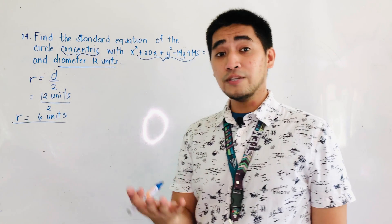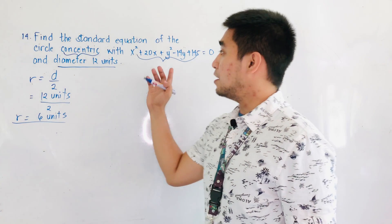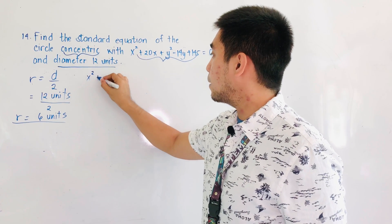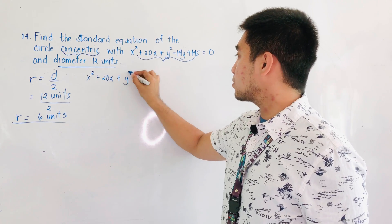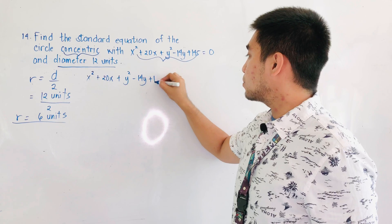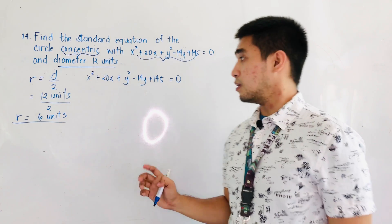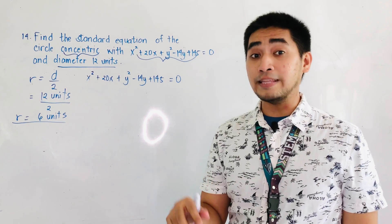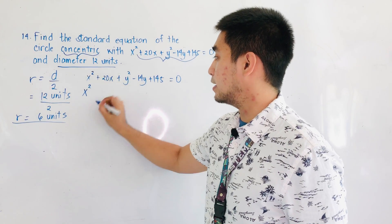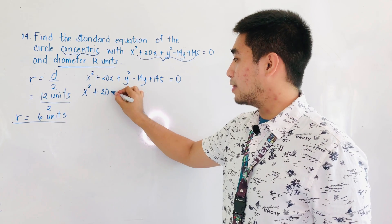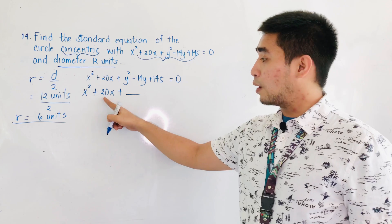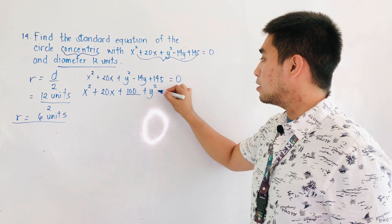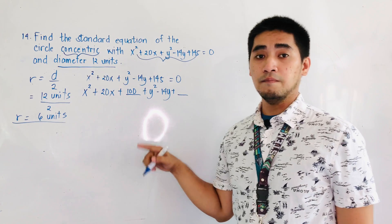So what we have to do now is to get the center of our circle. It's stated that the center will come from this equation. So let's rewrite the equation: x squared plus 20x plus y squared minus 14y plus 145 is equal to 0. As you can see, we do not have the constants yet. Therefore, what we have to do is to complete the square. Let us complete the square for the x term. We will have x squared plus 20x plus blank. We take 20 divided by 2 which is 10, and 10 squared is 100.